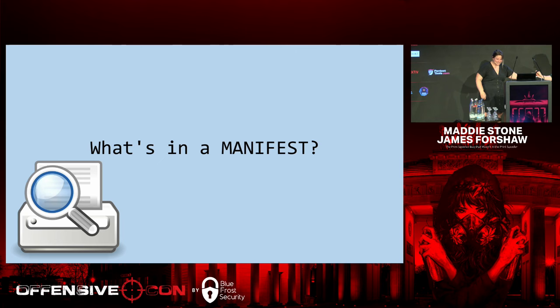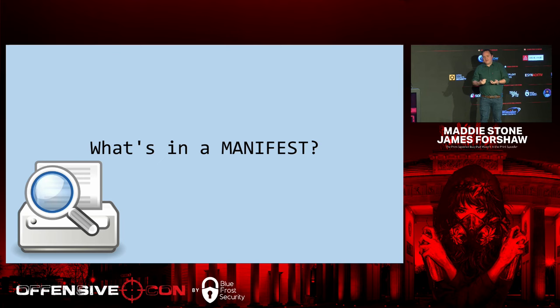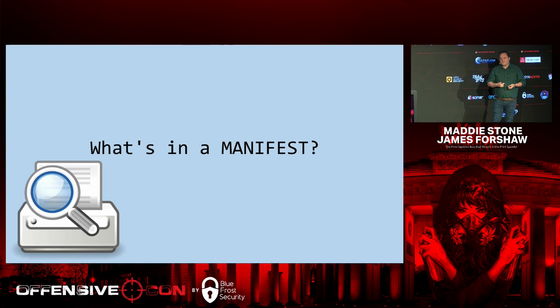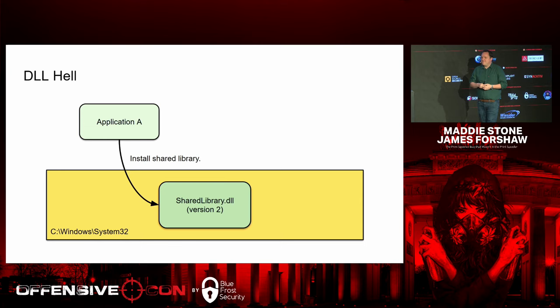I came in to help out, basically to try and use my Windows knowledge to figure out what this in-the-wild exploit was actually doing. So what is a manifest file? Manifest files are a component of a feature introduced in Windows XP called side-by-side assemblies. The primary purpose of side-by-side assemblies is to resolve a common problem of early versions of Windows called DLL hell — this is Microsoft's term for this.